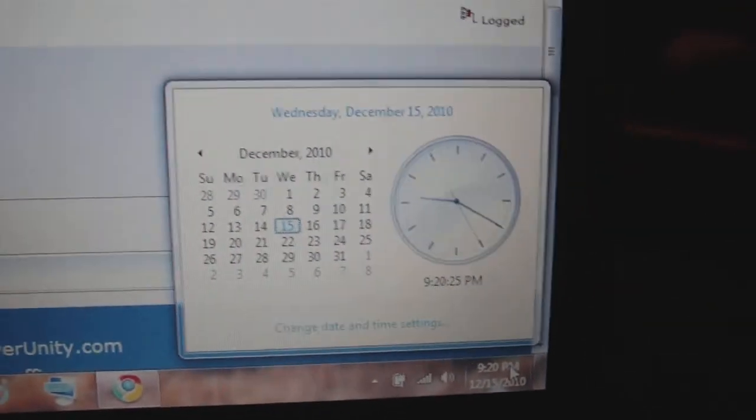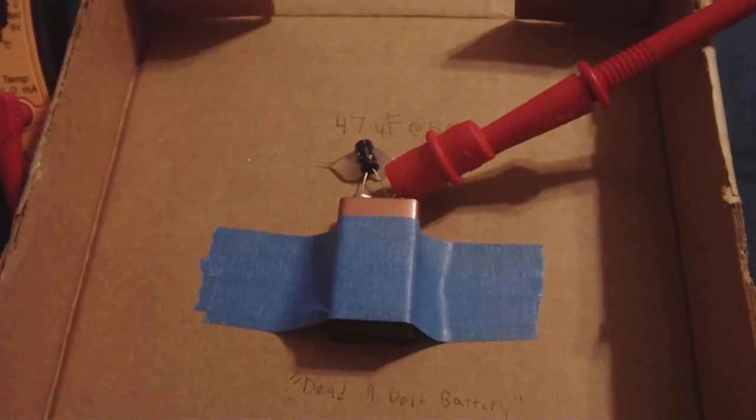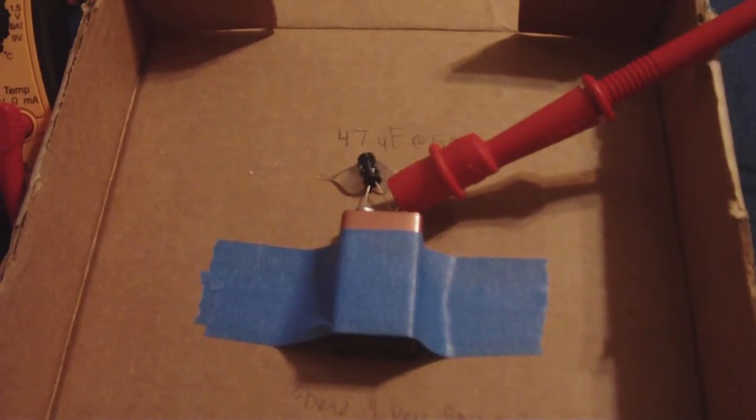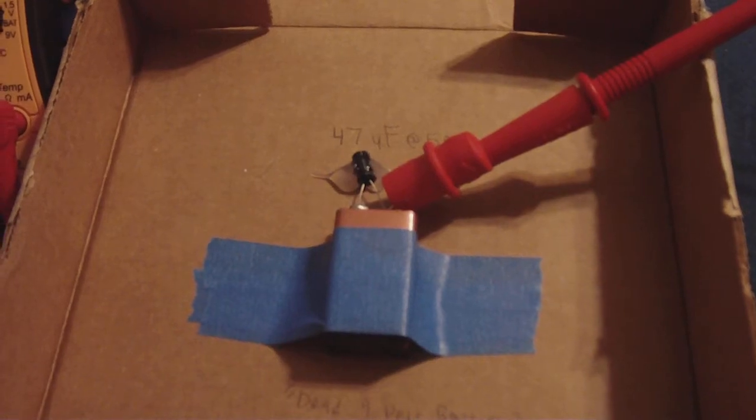And it started out at 7.90 volts. And it's been doing this since October 28, 2010. And today's December 15, 2010. So I know why it never went down was because the capacitor was full. But I never figured out why the battery voltage kept going up.